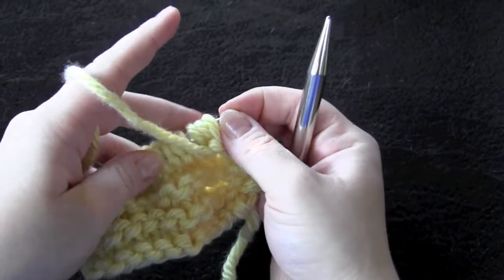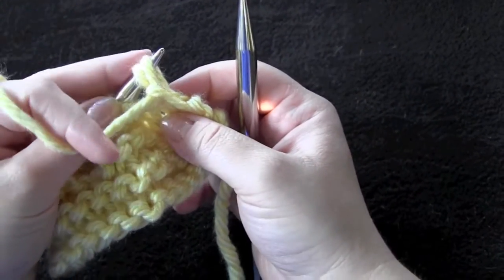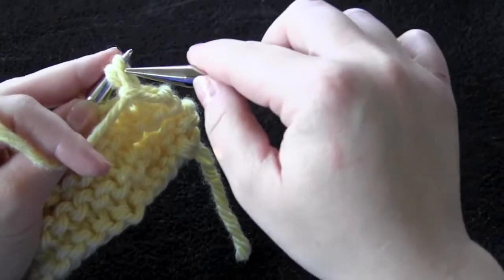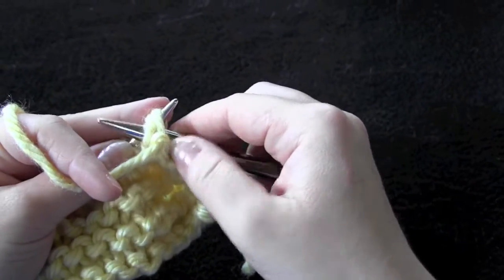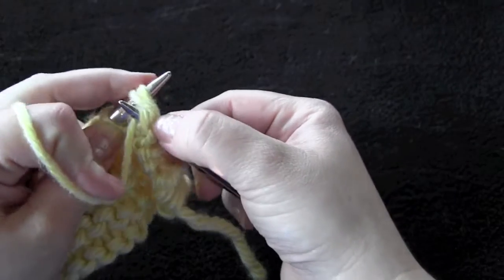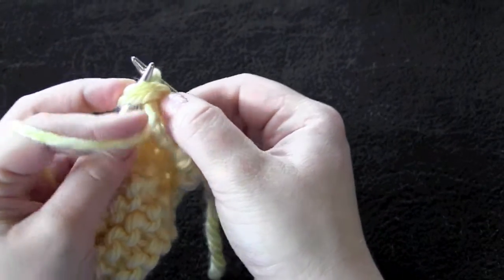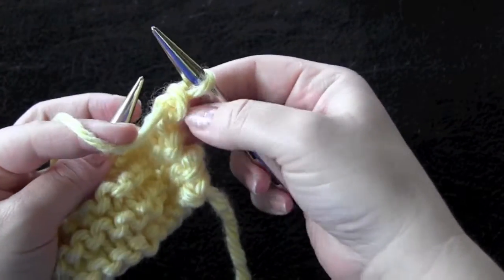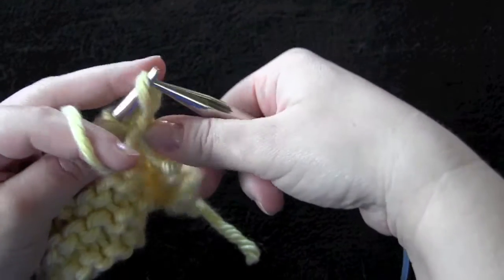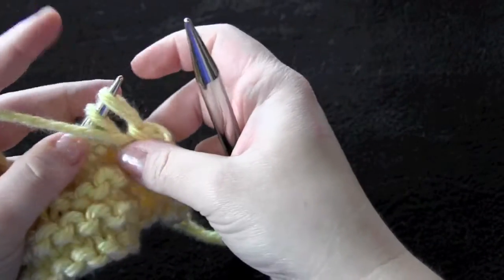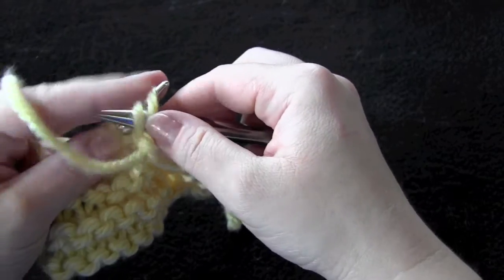A third way that you can work the decrease bind off is by purling two stitches together. So you just purl two together, and then that stitch goes back to the left needle, just like the other two methods that I showed you.